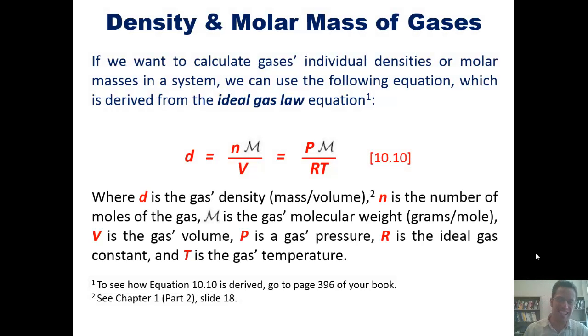In this equation, d is the gas's density, which is mass divided by volume. n is its number of moles. This fancy letter M is the gas's molecular weight in grams per mole. V is the gas's volume, P is its pressure, R is the ideal gas constant, which I talked about in an earlier video, and T is the gas's temperature.